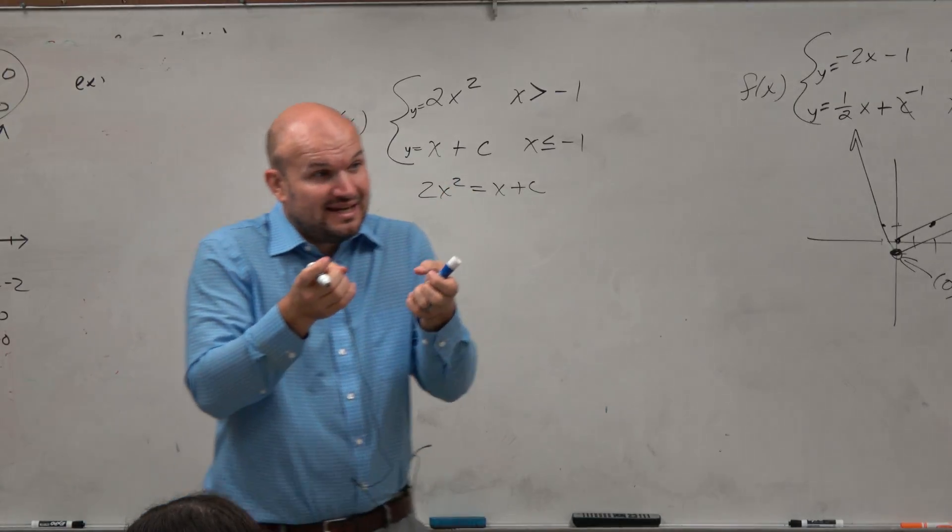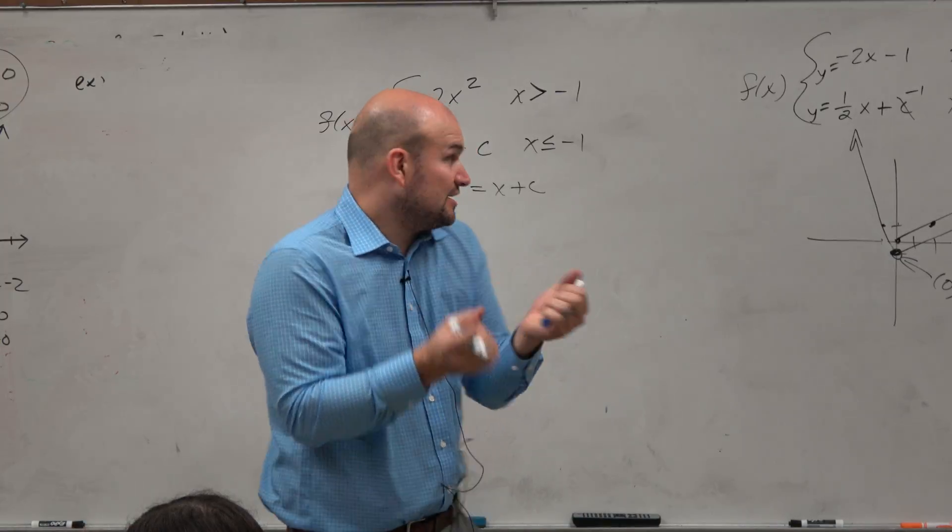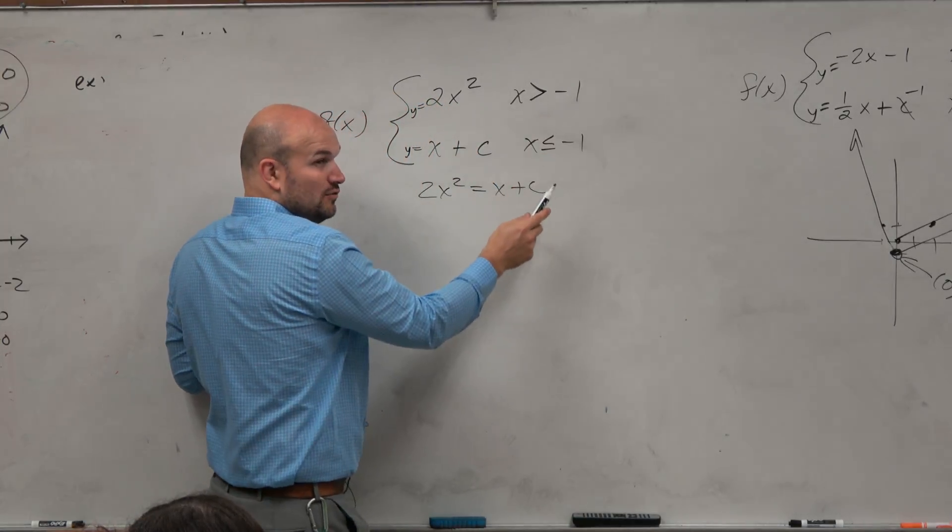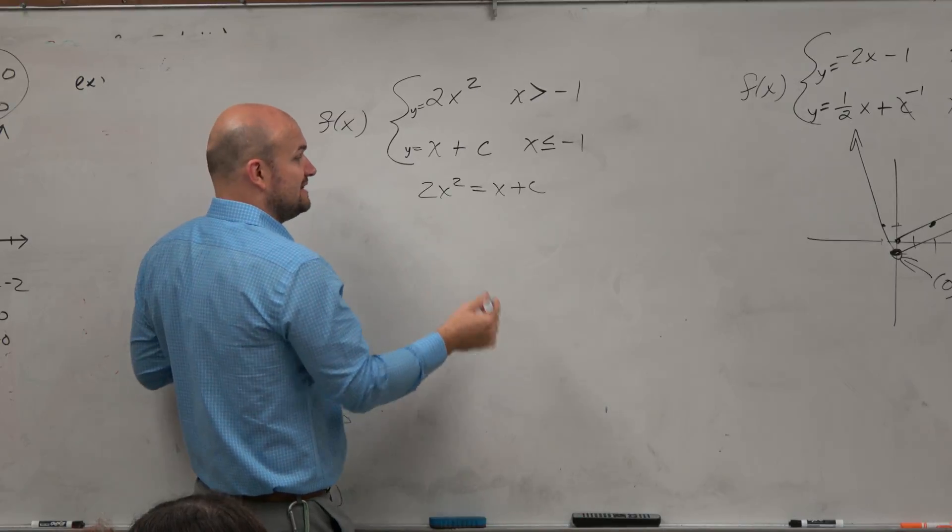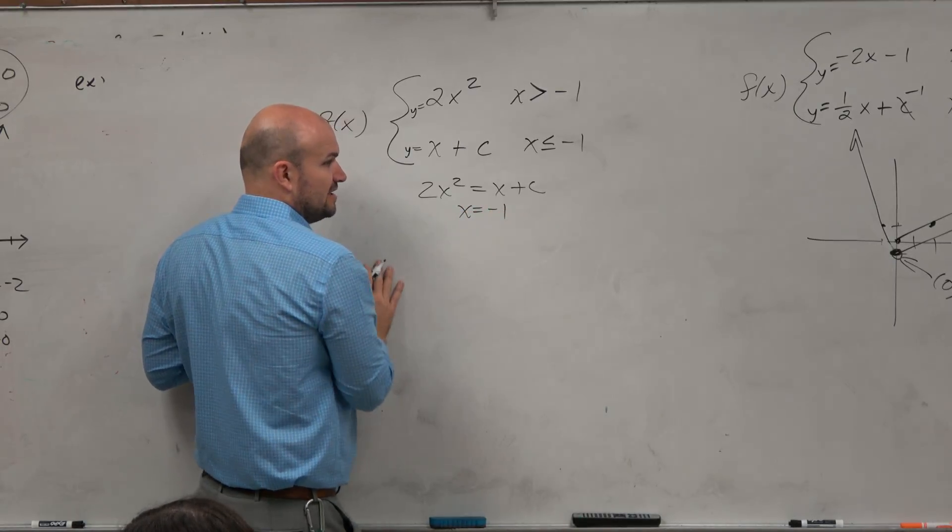And then we want to see, well, if they're going to be discontinuous, they're going to be discontinuous at x equals negative 1. So I want to find what y value is going to make them continuous when x equals negative 1.